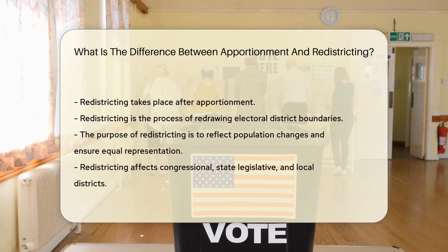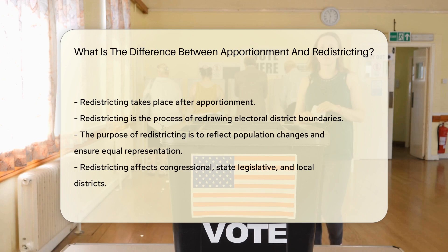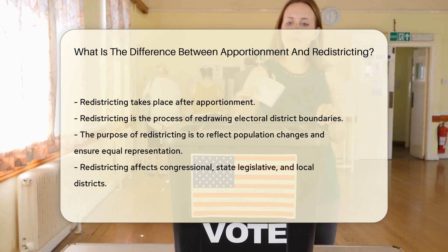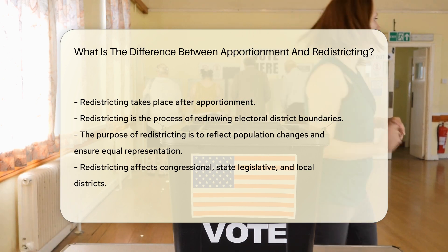After apportionment, redistricting takes place. Redistricting is the process of redrawing electoral district boundaries. This is done to reflect population changes and ensure equal representation. It affects congressional, state legislative, and local districts.